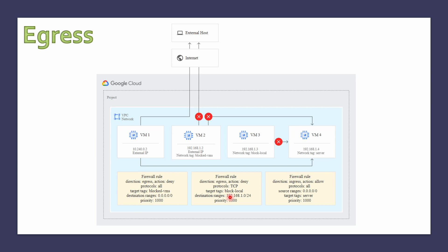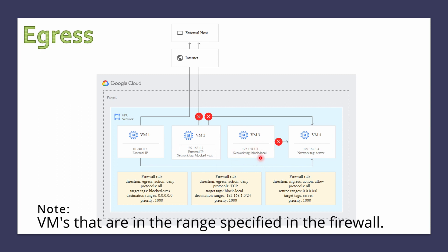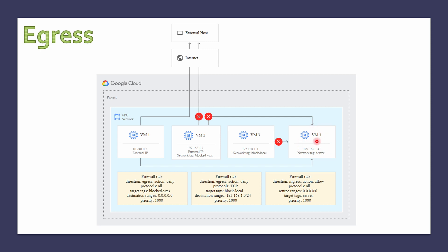VM3 has the network tag 'block-local', which blocks all outgoing traffic to internal VMs within a specific IP range. So VM3 can never send TCP traffic to VM4, even though VM4 has an ingress rule allowing anyone — because VM3's egress rule blocks it. The exception is that VM3 can still send UDP traffic since only TCP is being blocked.